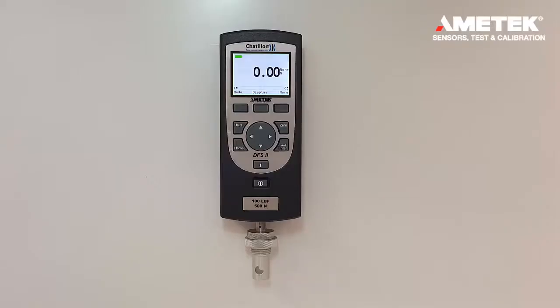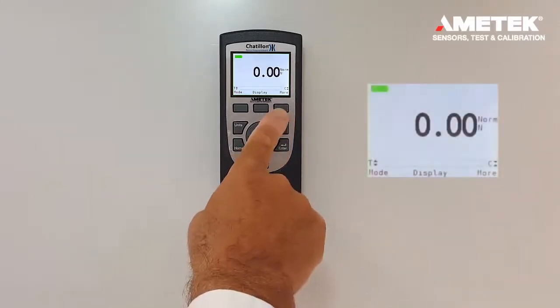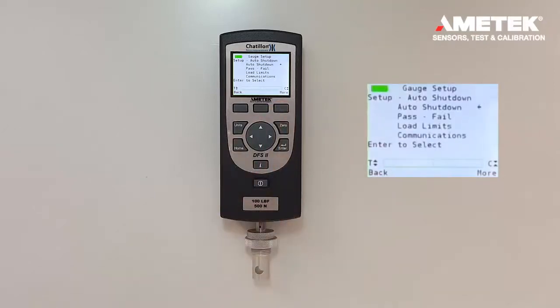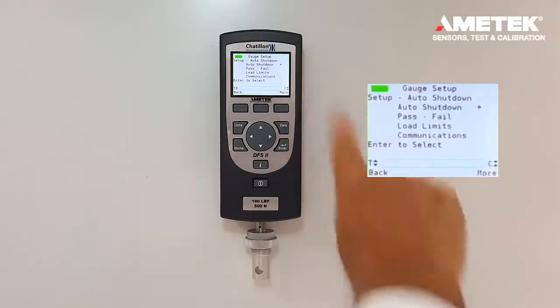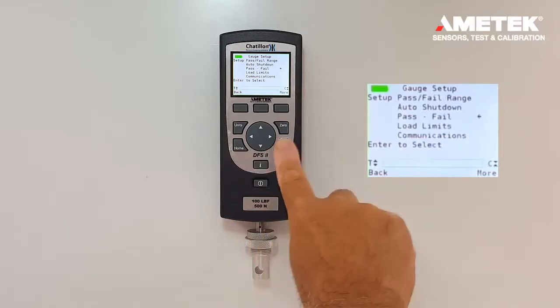In order to go into the pass-fail setting screen, press the F3 button more twice, one, two. Then arrow down to the pass-fail screen selection. Then press the enter button.